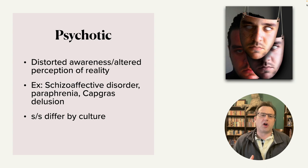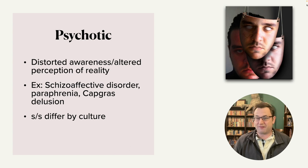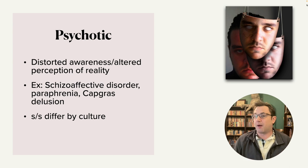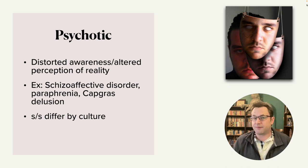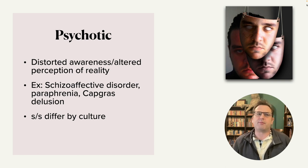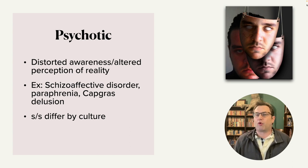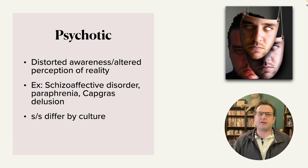Psychotic disorders are disordered awarenesses or altered perceptions of reality. Examples include schizoaffective disorder, paraphrenia, and Capgras delusion — a disorder in which you believe that somebody has been replaced by a doppelganger. This is related to the point that signs and symptoms differ by culture. There's a study finding that people from India kind of enjoyed their schizophrenia — they found it supportive and helpful — while people from Western cultures typically do not. So there's very obviously a cultural component to some of these disorders that we don't understand.